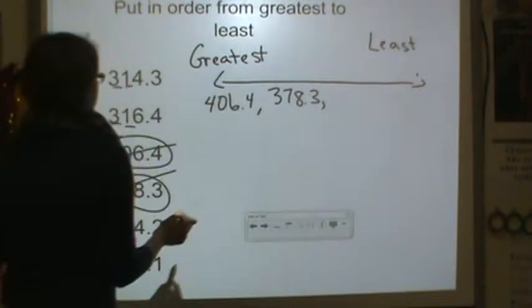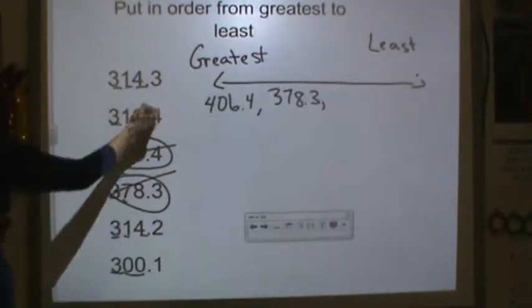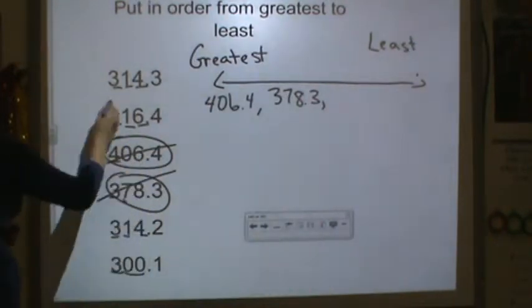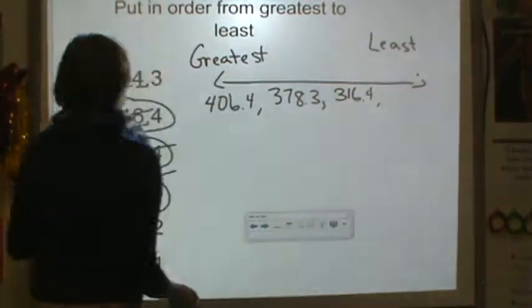Now I'm going to go to the next place value. I've got a 4, a 4, a 4, and a 0. A 4, a 6, a 4, and a 0. Sorry. 6 is the largest number here, so I'm going to use it. 316 and 4 tenths.